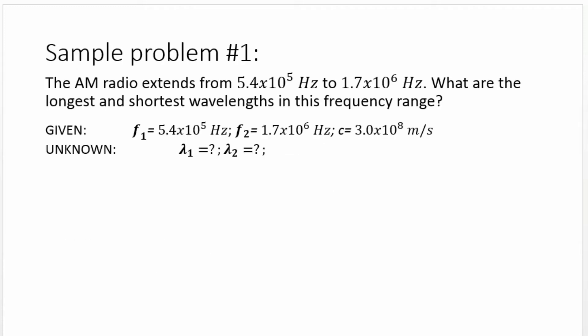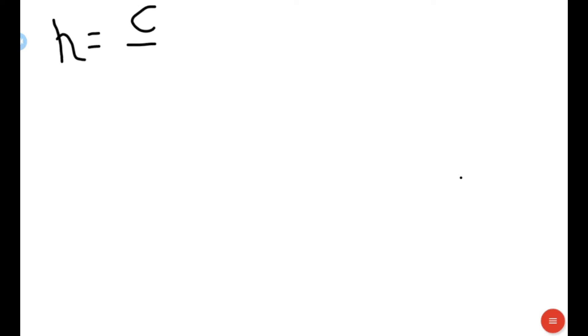Let's have a sample problem. AM radio extends from 5.4 times 10 to the 5th Hertz to 1.7 times 10 to the 6th Hertz. What are the longest and shortest wavelengths in this frequency range? We know c equals 3 times 10 to the 8th meters per second, and we are asked for the longest and shortest wavelengths. Our working equation is lambda equals c over f.